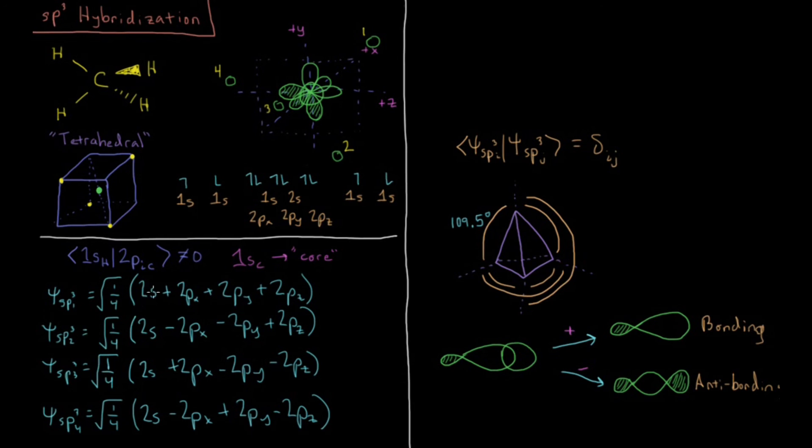And what is their percent p character and percent s character? Well, we have square root of one-fourth, which squared is one-fourth. One-fourth is the square coefficient on all four of these. So on all four of them, you have 1s is a quarter, and then a quarter on each of these adds up to three-quarters. So our sp3 orbitals are indeed 25% s and 75% p, as would be implied by the combination sp3, where it's three parts p for every one part s.